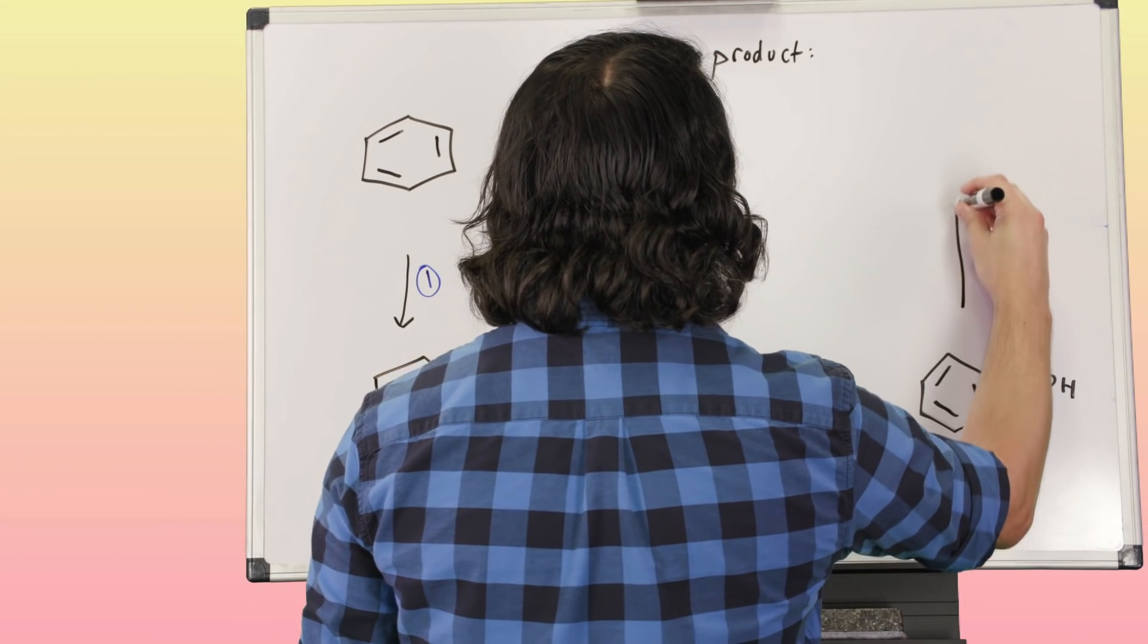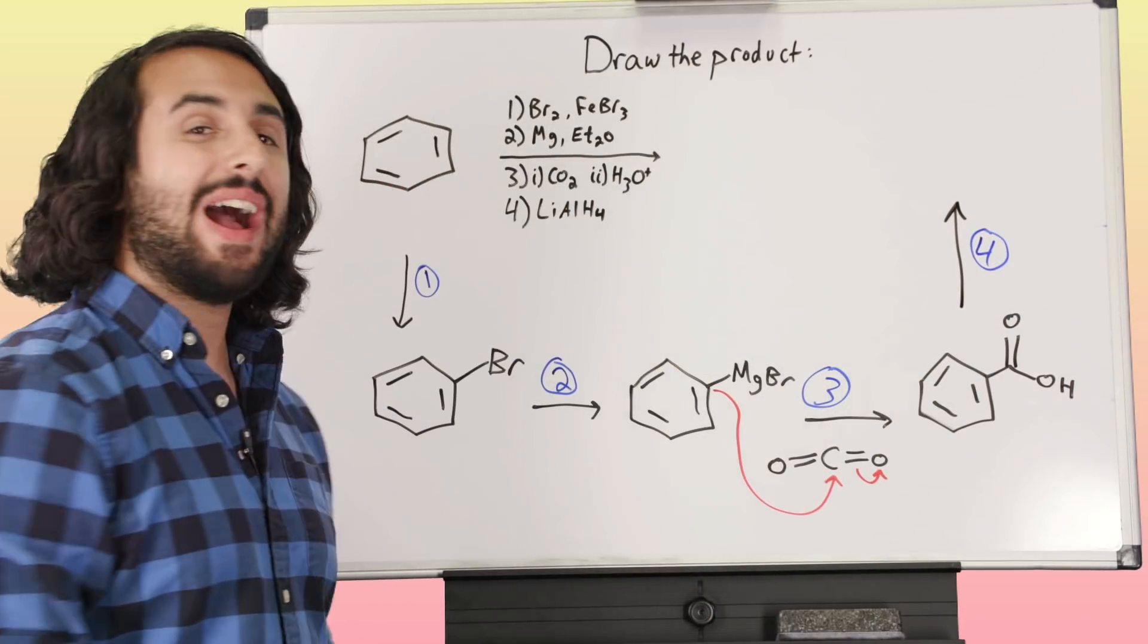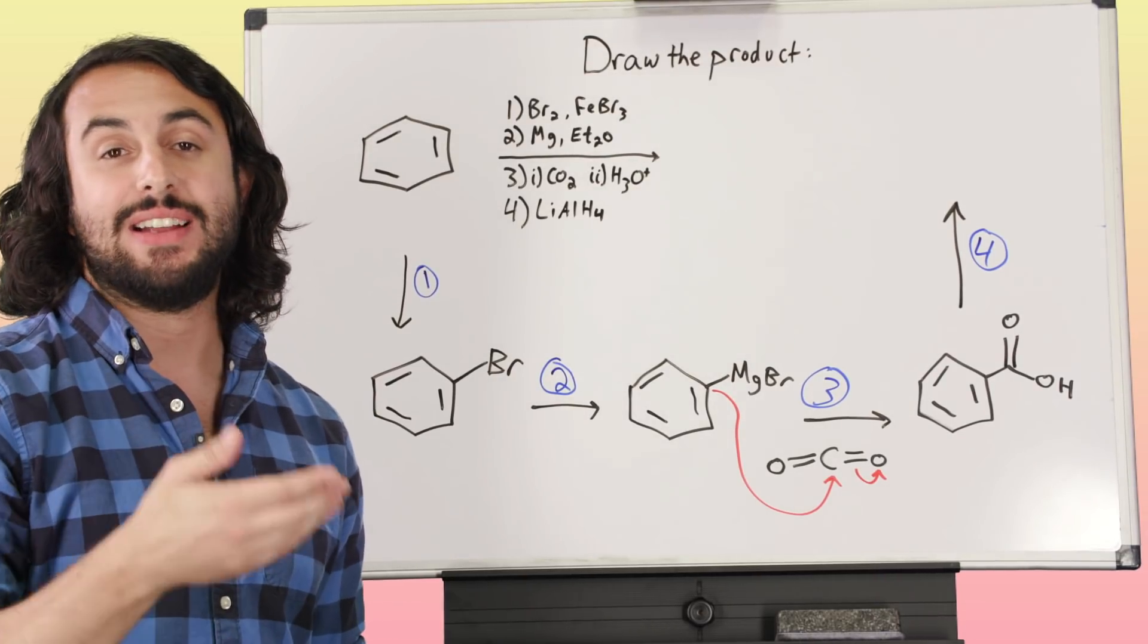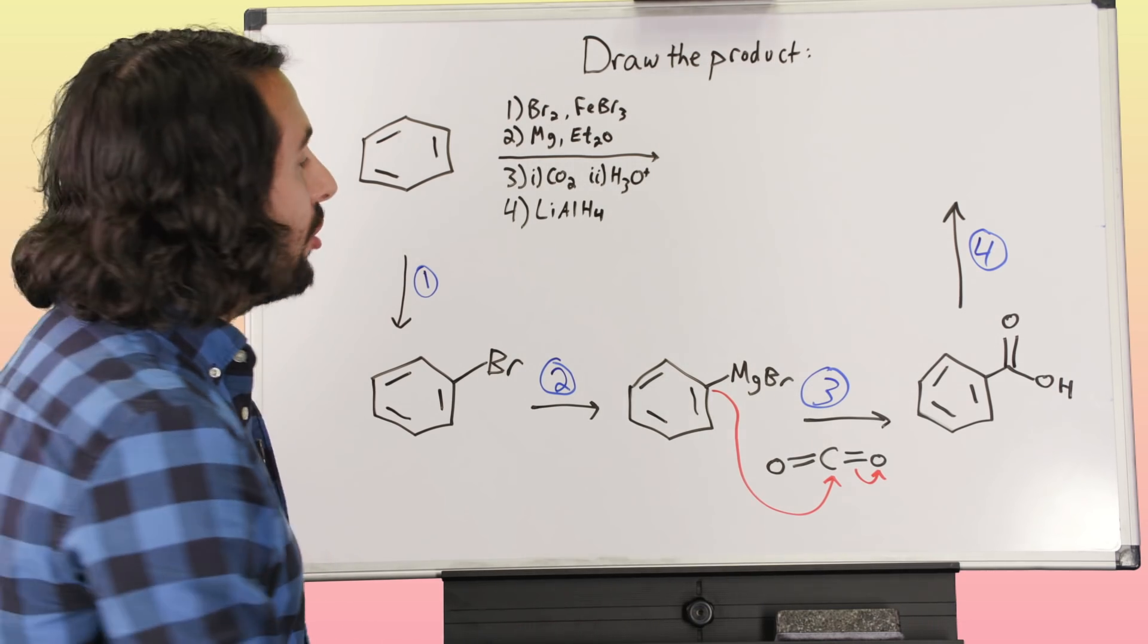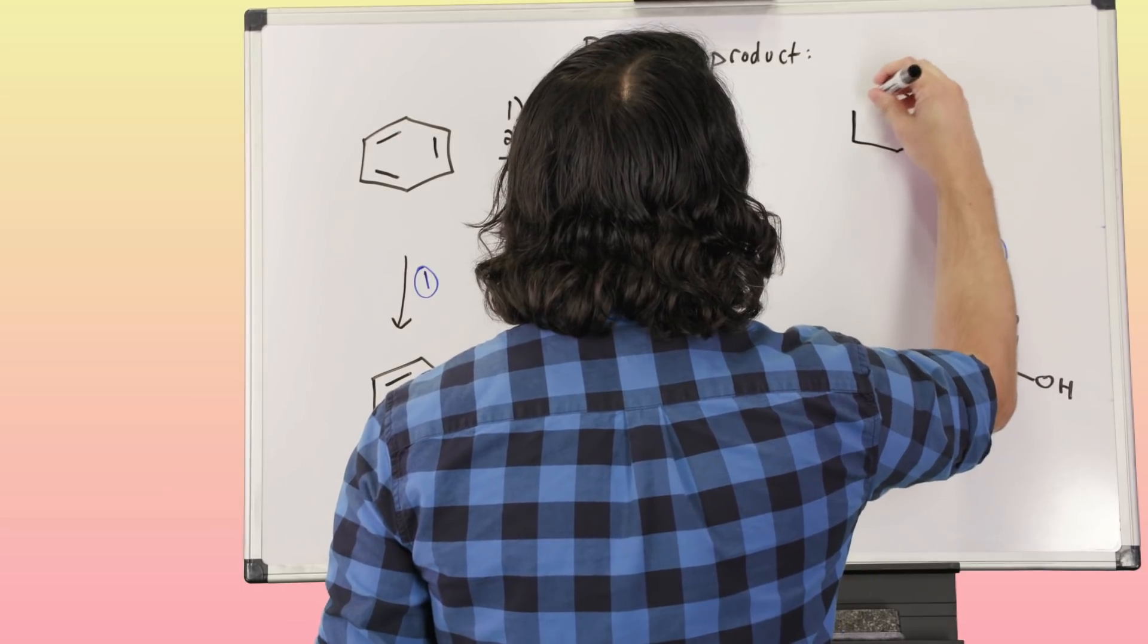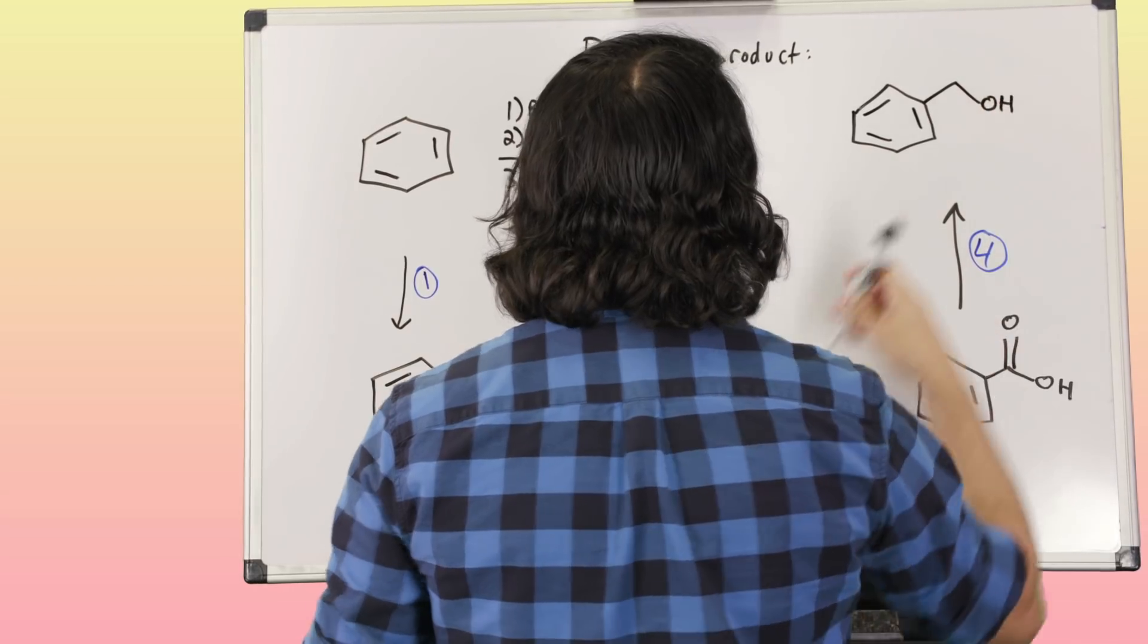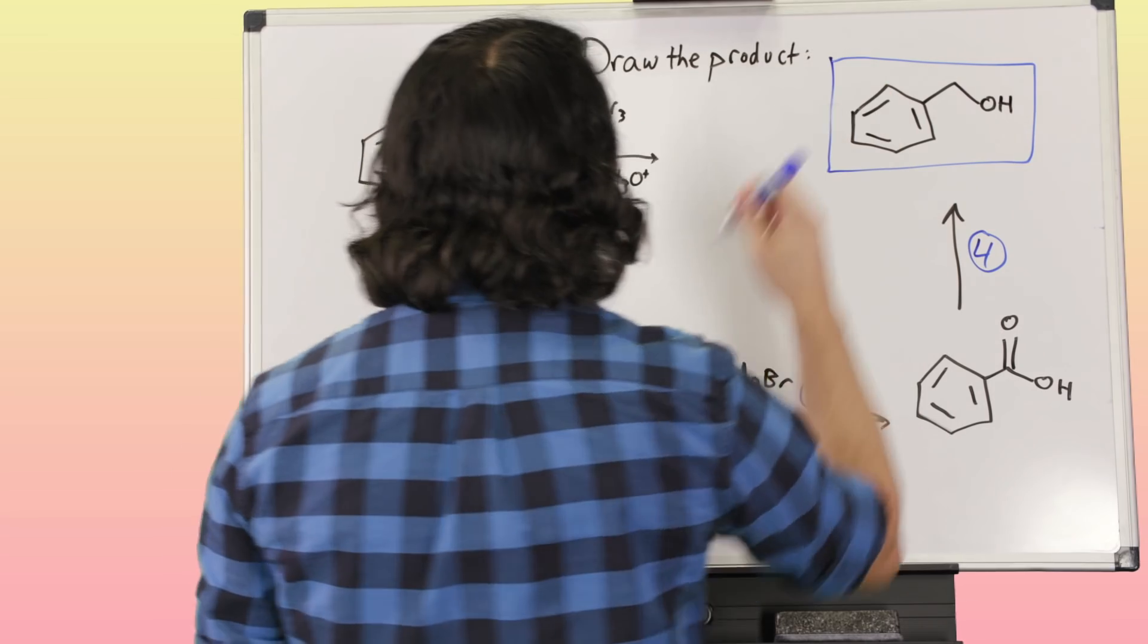And then lastly, we know that lithium aluminum hydride is a very strong reducing agent. It is capable of reducing not just aldehydes and ketones, but also carboxylic acids and esters. So lithium aluminum hydride is able to take this all the way down to the primary alcohol. And so we do get this as our answer.